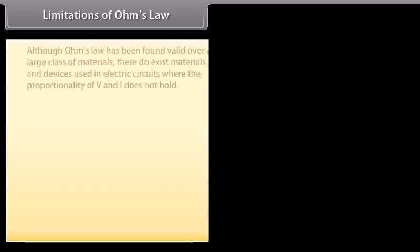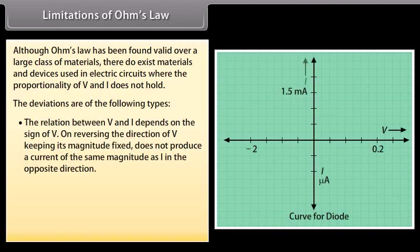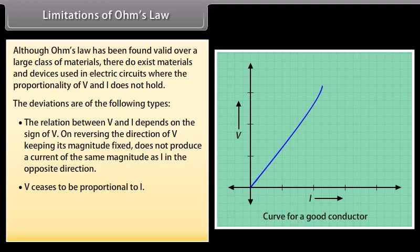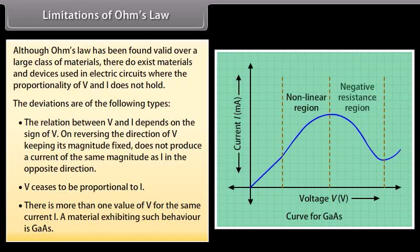Although Ohm's Law is valid over a large class of materials, there exist materials and devices where the proportionality of V and I does not hold. Deviations include: the relation between V and I depends on the sign of V; reversing V does not produce a current of the same magnitude in the opposite direction; V ceases to be proportional to I; or there is more than one value of V for the same current. A material exhibiting such behaviour is gallium arsenide.